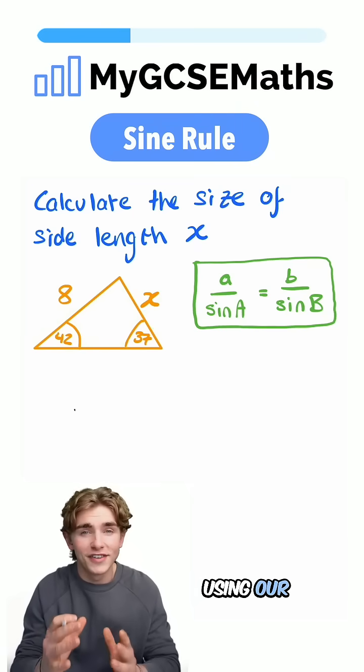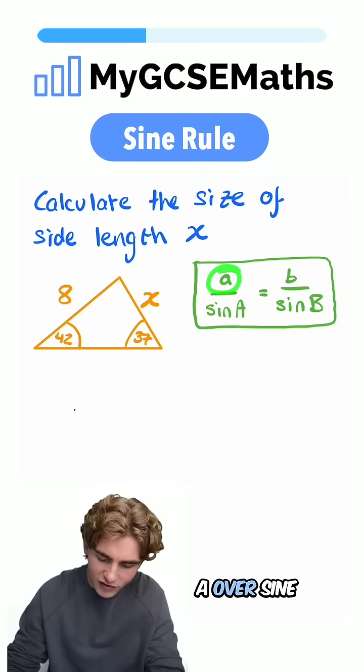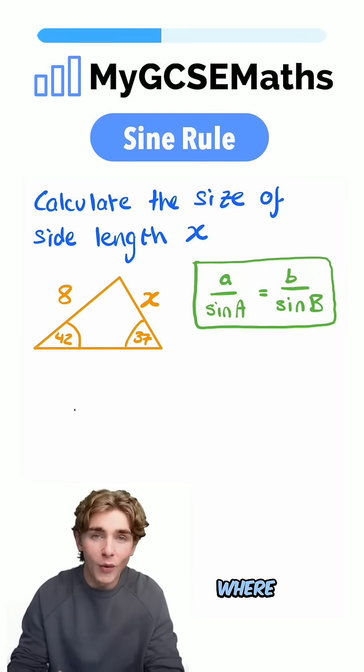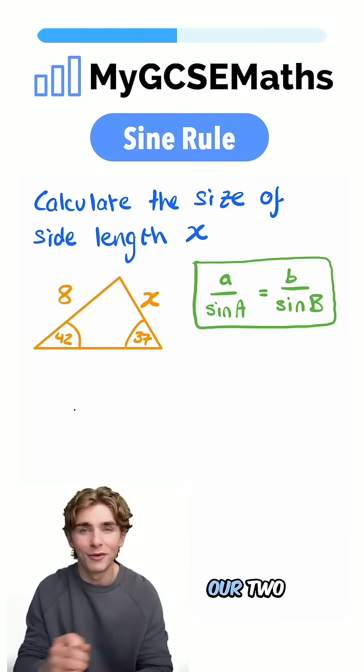That tells us that we're going to be using our sine rule. This is in our formula book. It tells us that lowercase a over sine uppercase A equals lowercase b over sine uppercase B, where lowercase a and b are our two side lengths and uppercase A and B are our two angles.